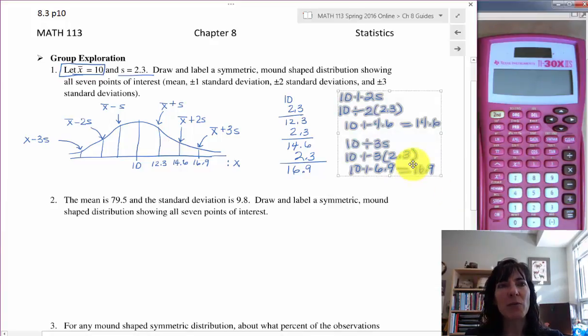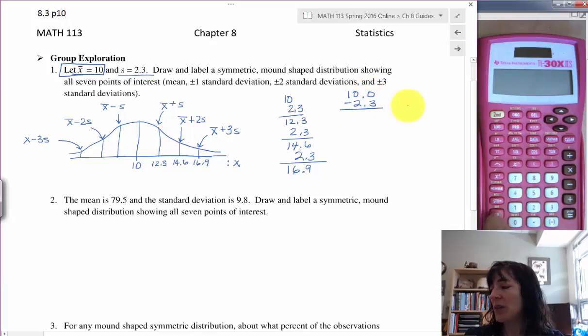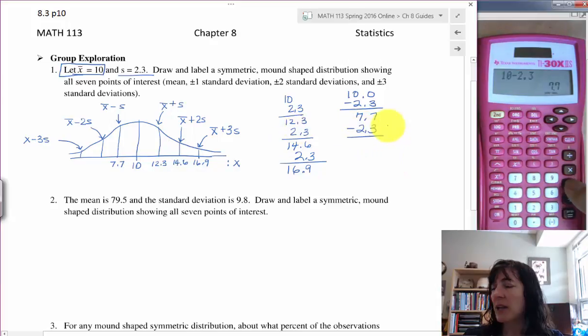So now I'm starting with 10 and I'm subtracting 2.3. At this point I'm going to be lazy and I'm going to do 10 minus 2.3 on my calculator and I get 7.7, which is the value that goes here: 7.7. Then I can subtract off another 2.3, and it's sitting on my calculator so I might as well subtract off 2.3 there and get 5.4.